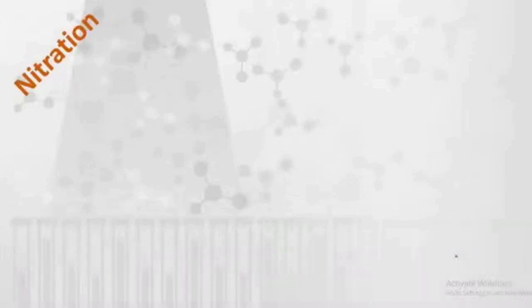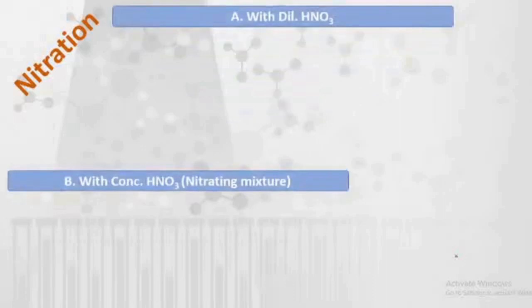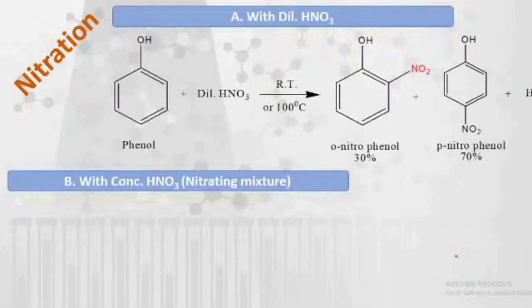Nitration reaction. In nitration, there are two types of conditions we are going to discuss: one with dilute nitric acid and the other with concentrated nitric acid, that is the nitrating mixture. With dilute nitric acid, there is a formation of two different products under two different reaction conditions.